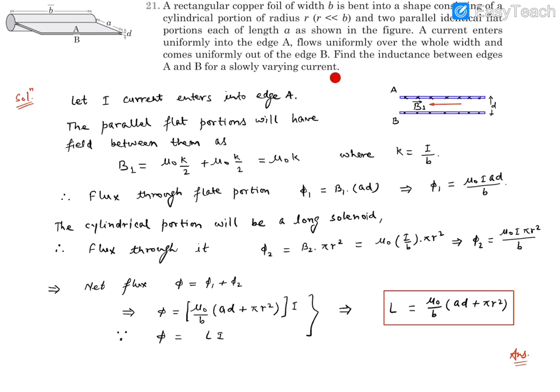So there's a flat foil, and this is edge A. This goes over this cylinder, then a similar kind of edge forms here, B. Let's say current I enters through edge A.